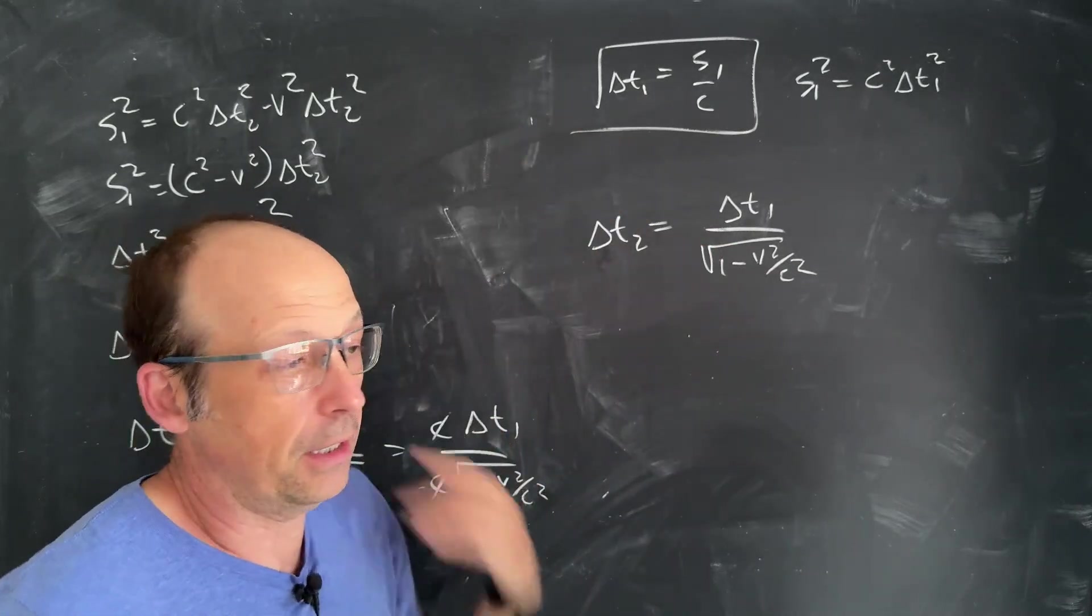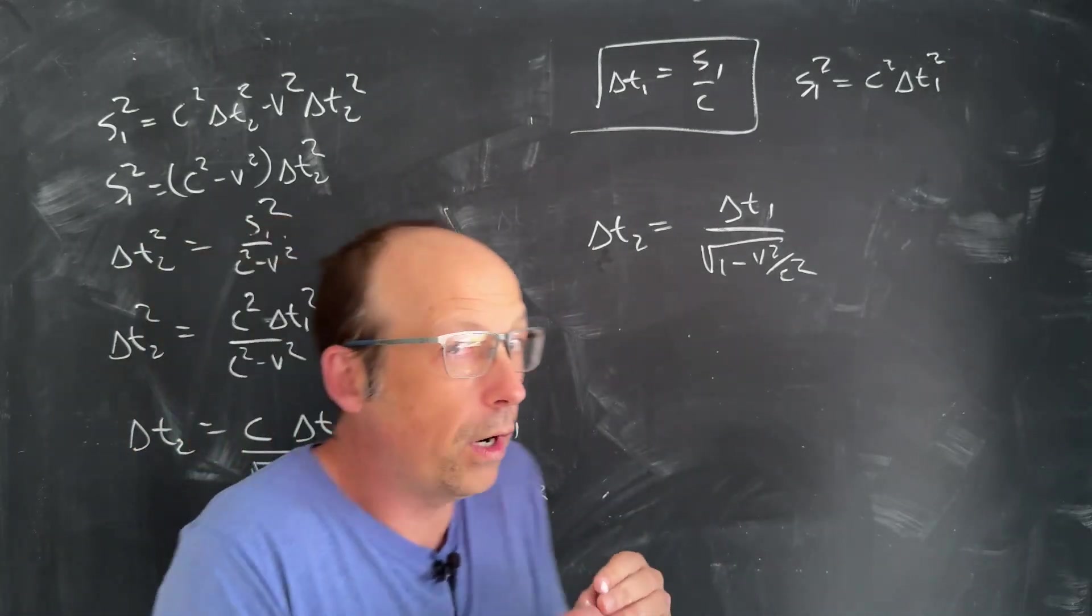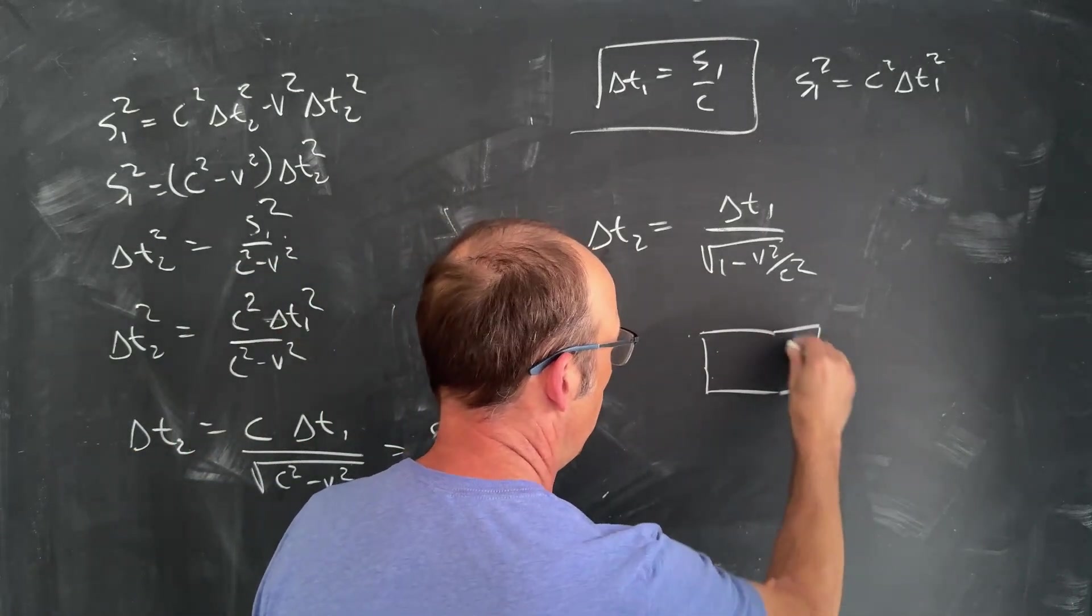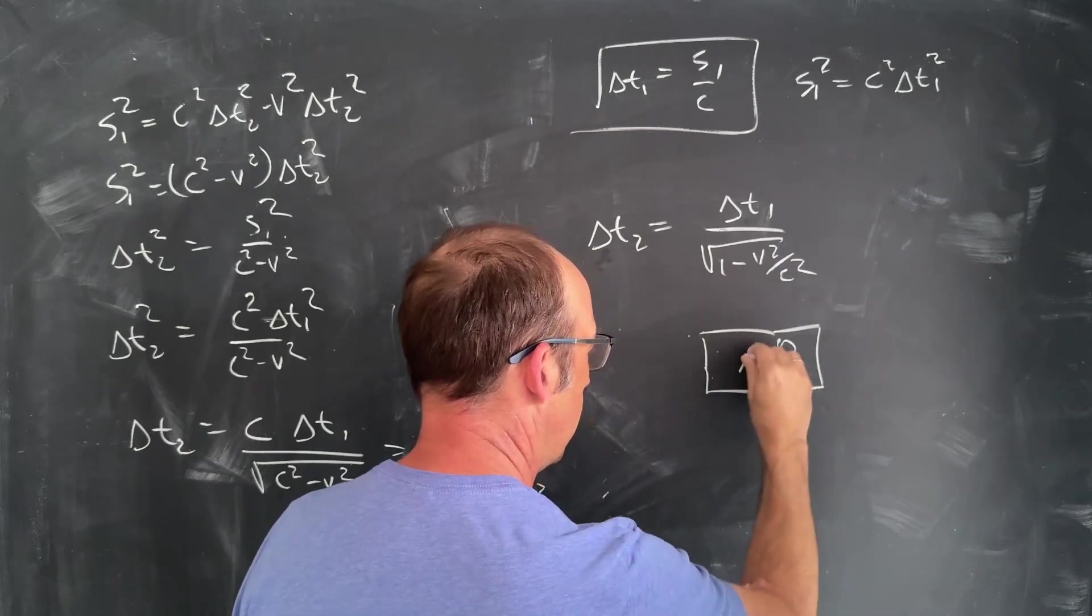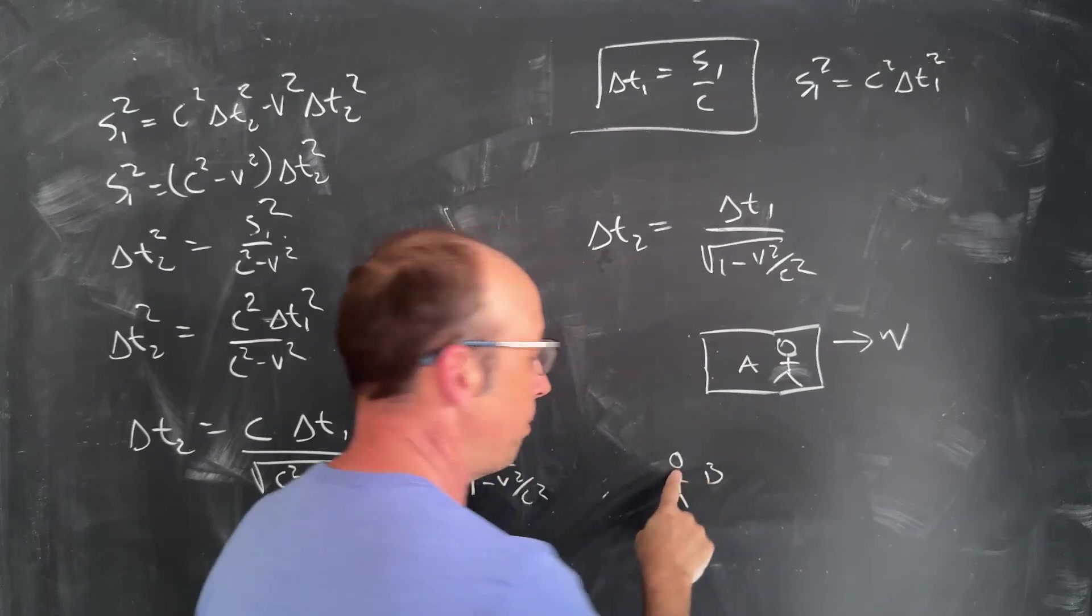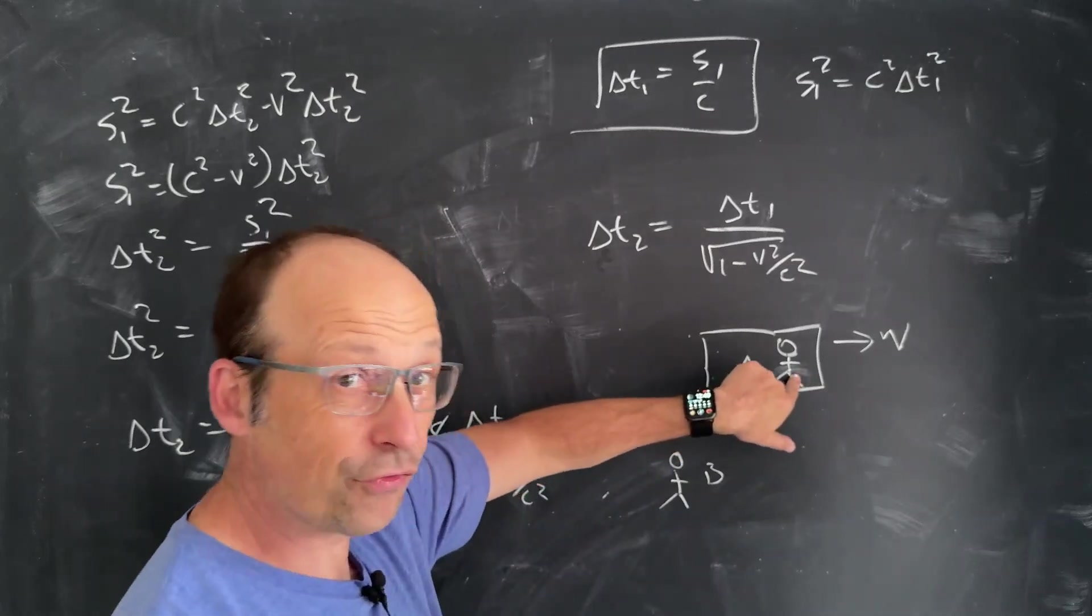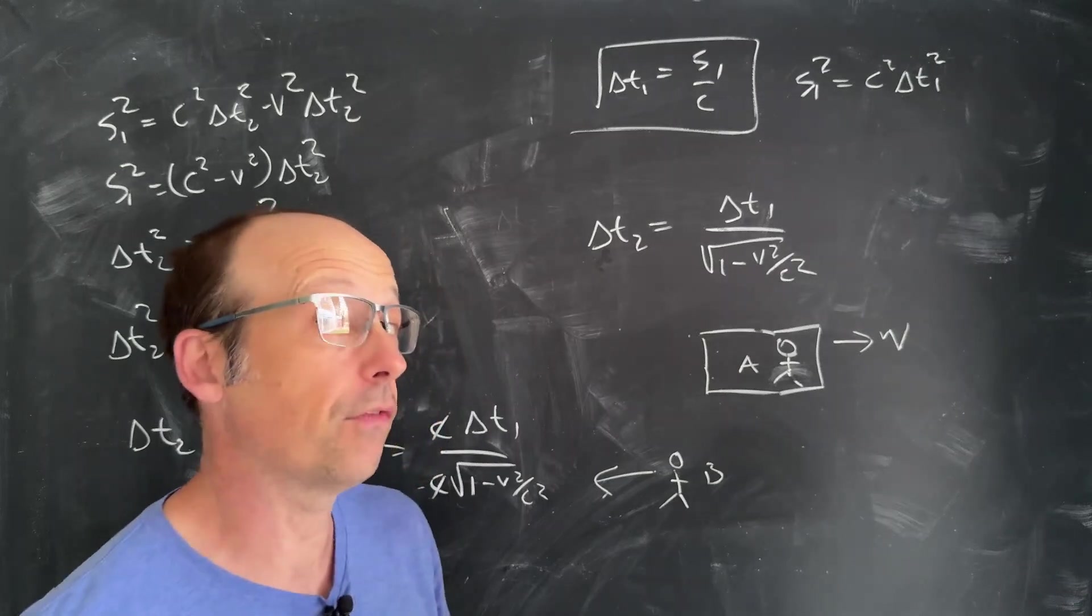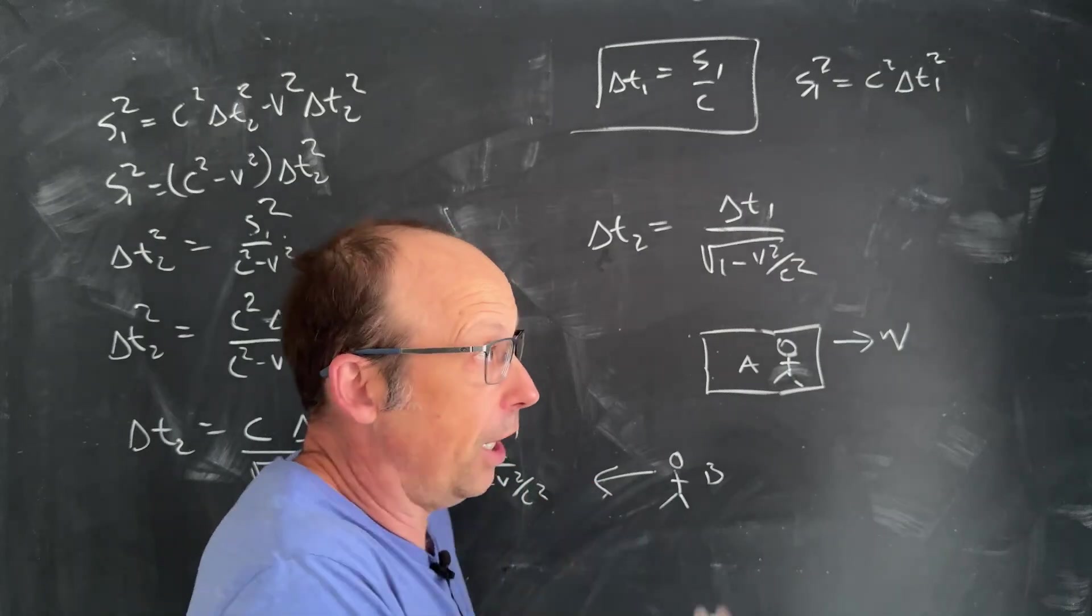So this is your time dilation equation. We did it. Now one of the important things to remember is that if I have this person A moving with velocity V and then I have person B over here stationary, B sees A with time going slower. But A's frame's moving at a constant speed. So from their perspective, B is moving back that way at velocity V. So A sees person B's time moving slower. They both see the other person's time slower.